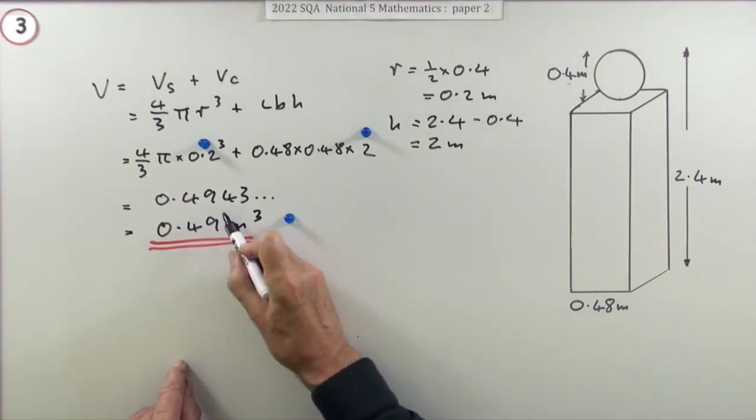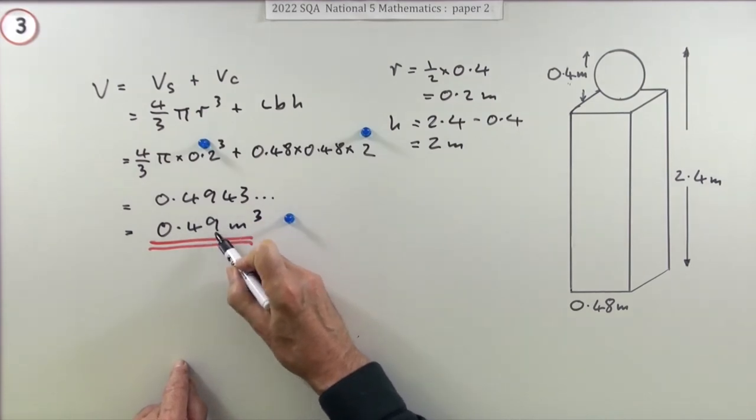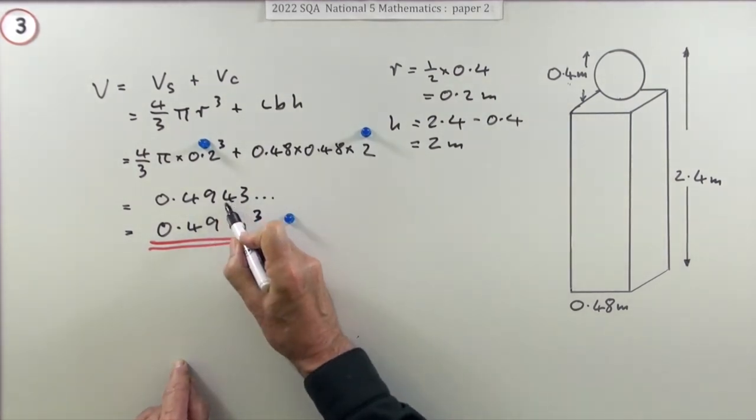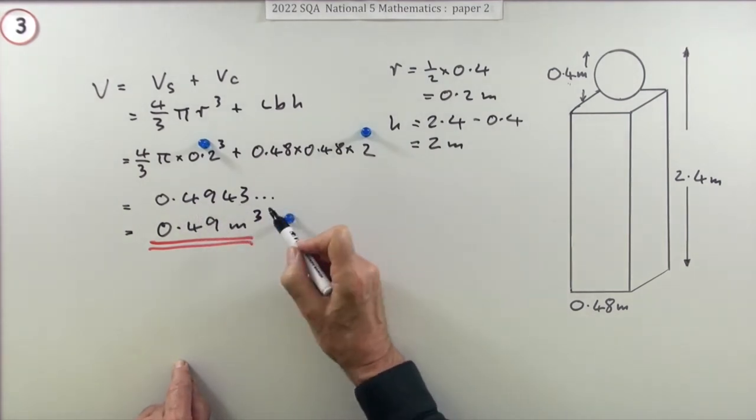The answer will just be a million times bigger, so that would be 49 with four zeros after it, or 494 with three zeros, or 4943 with two zeros.